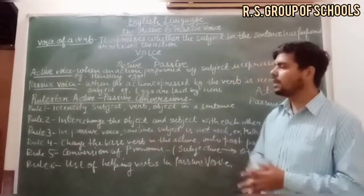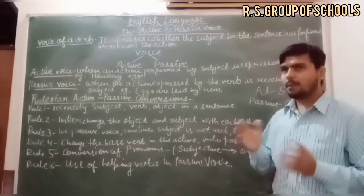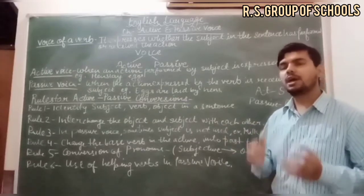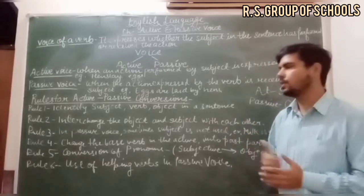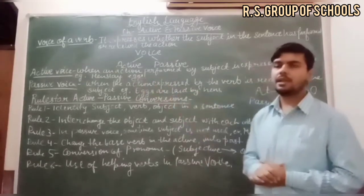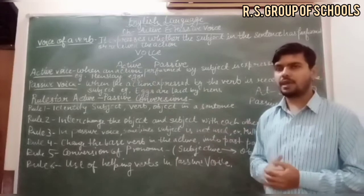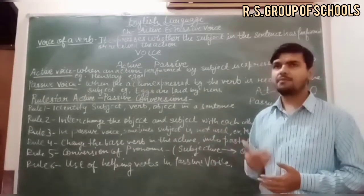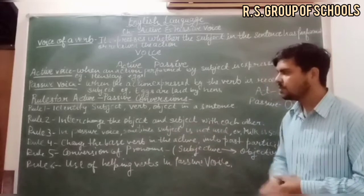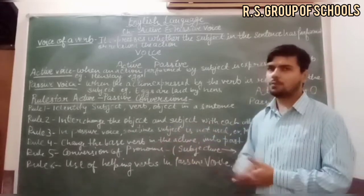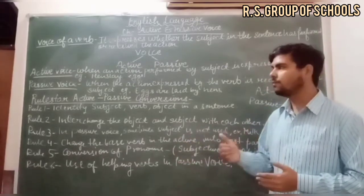The fourth rule is to change the base verb into past participle. When we convert active to passive, the base verb changes to the third form of the verb — past participle. For example: 'plucking' becomes 'plucked', 'eat' becomes 'eaten', 'drive' becomes 'driven.' The verb is converted to its past participle form.